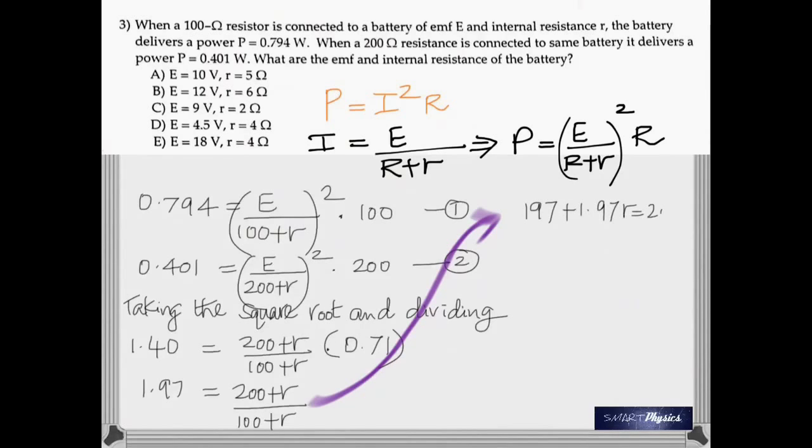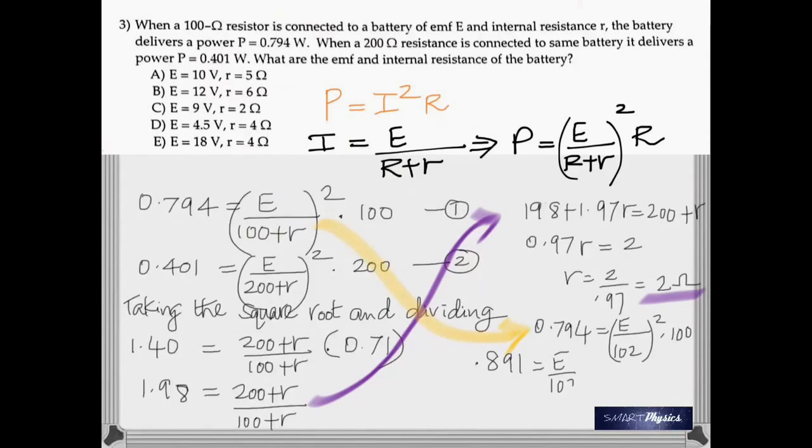Cross multiply. Get the internal resistance as two ohm. And on substituting the value of internal resistance into equation 1, get the EMF as 9.08 V.